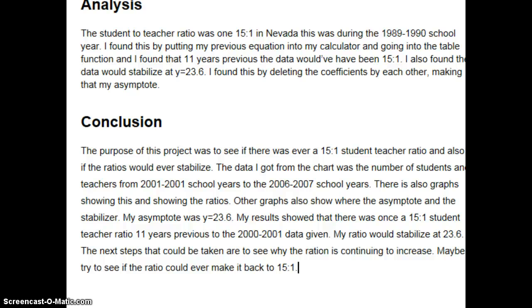For the conclusion, the purpose of this project was to see if there was ever a 15 to 1 student to teacher ratio. The data came from the chart with the number of students and teachers from 2001 to 2007 school years. There are graphs showing this and showing the ratios, and other graphs showing where the asymptote and stabilization point is. My results show that there was once a 15 to 1 student to teacher ratio 11 years prior to the data given, and my ratio would stabilize at 23.6.